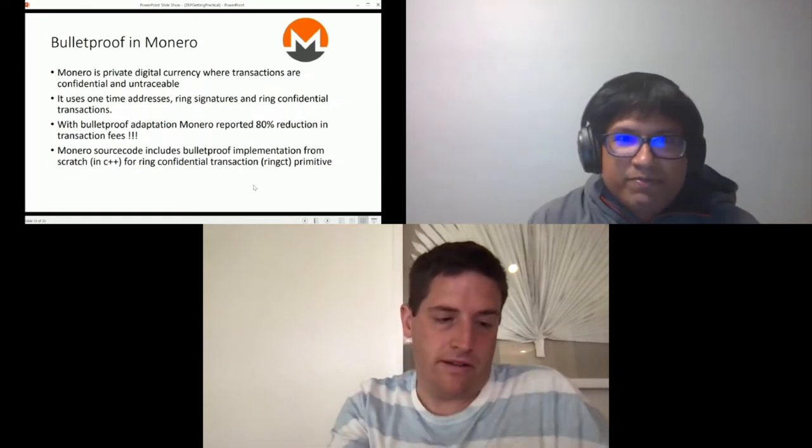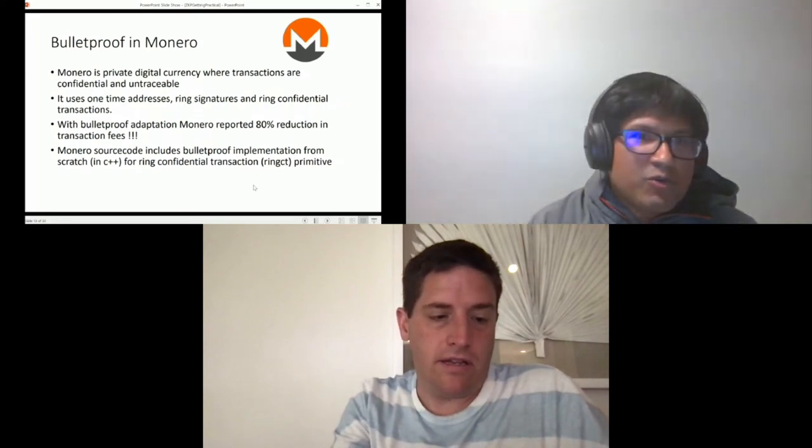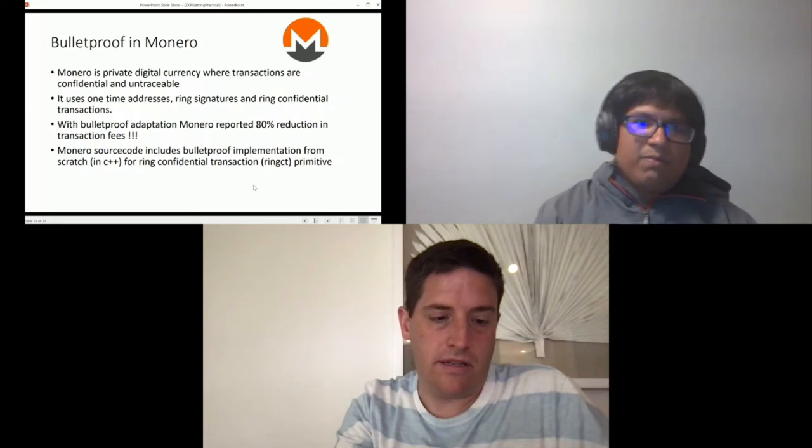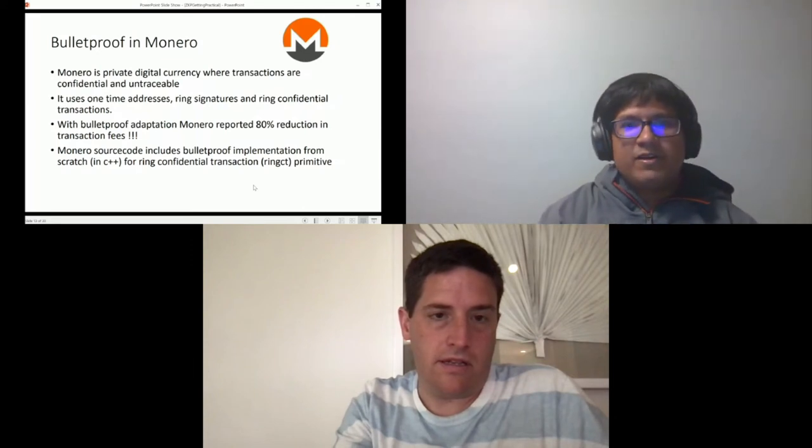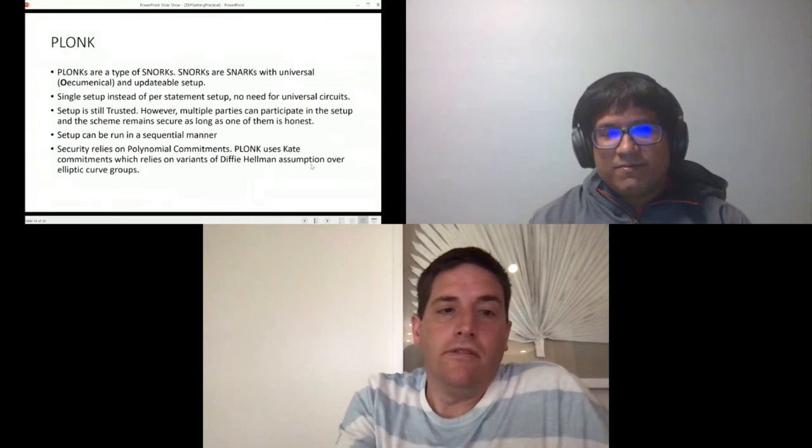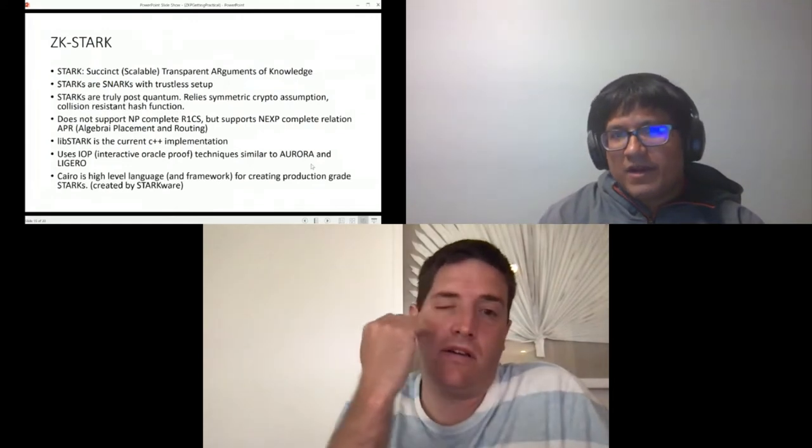One of the disadvantages of SNARKs was the trusted setup. And now we have Plonk which is an improvement of SNARKs where the setup is universal and updatable. It also relies on much easier crypto assumptions called KZG commitments.